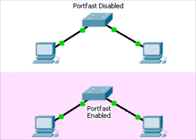Here we have two sets of networks. The top network has Port Fast disabled on its switch port interfaces, while the bottom has Port Fast enabled. This power cycles the switches to see how long it takes for the switch to reach the forwarding state.